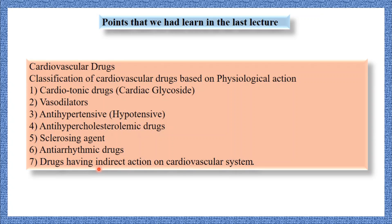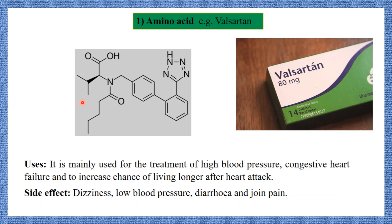An example of an anti-arrhythmic drug is mexiletine. The seventh class is diuretics — drugs used to increase the output of the kidney, thereby reducing extracellular fluid in the body. Diuretics indirectly act on the cardiovascular system. Today we are going to learn the classification of cardiovascular drugs based on their pharmacological action.